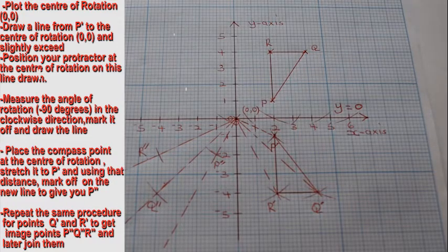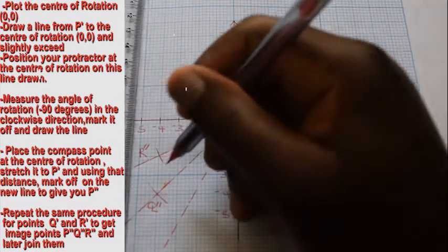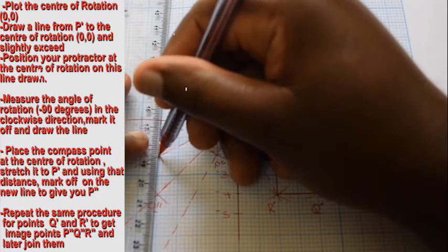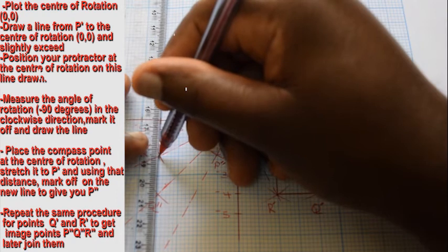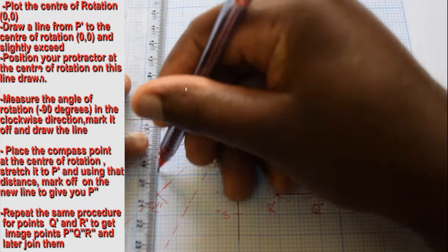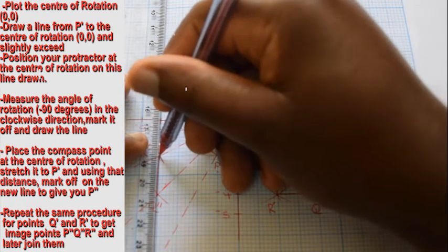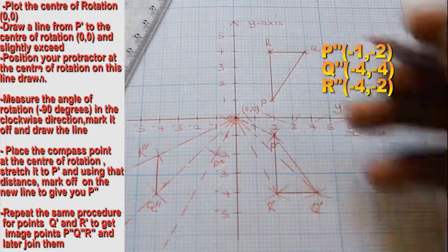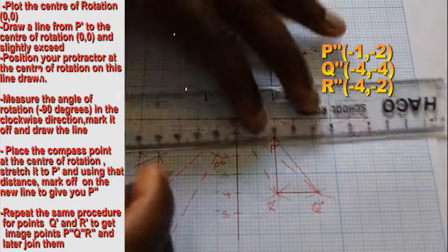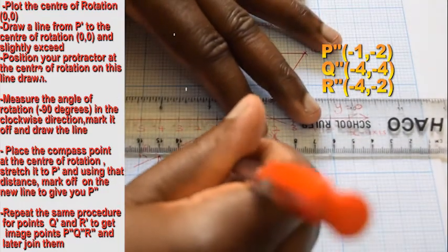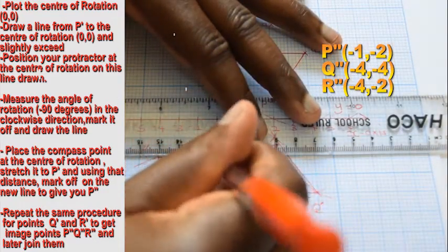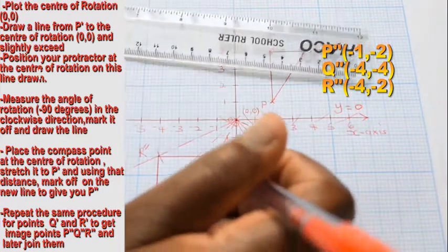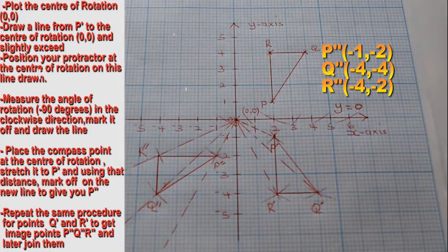Using a ruler, join the image points to form the image shape. Read off the image coordinates, that is P'', Q'', and R''.